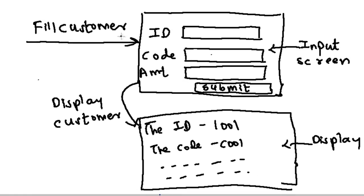In this example we will create two screens. One is the input screen where the user can fill in the customer ID, customer code, and amount, and there will be a submit button. The second is the display screen where the user will see whatever data has been entered into the text boxes.